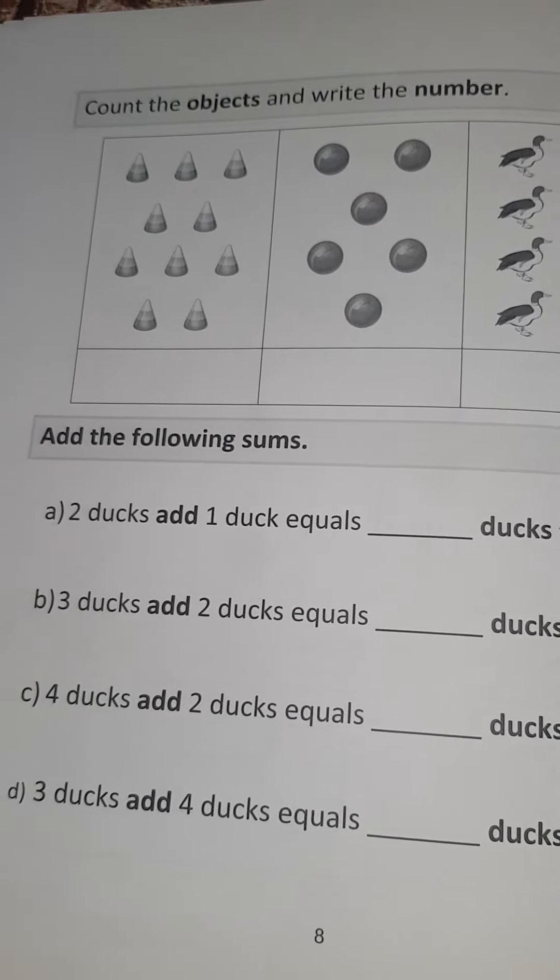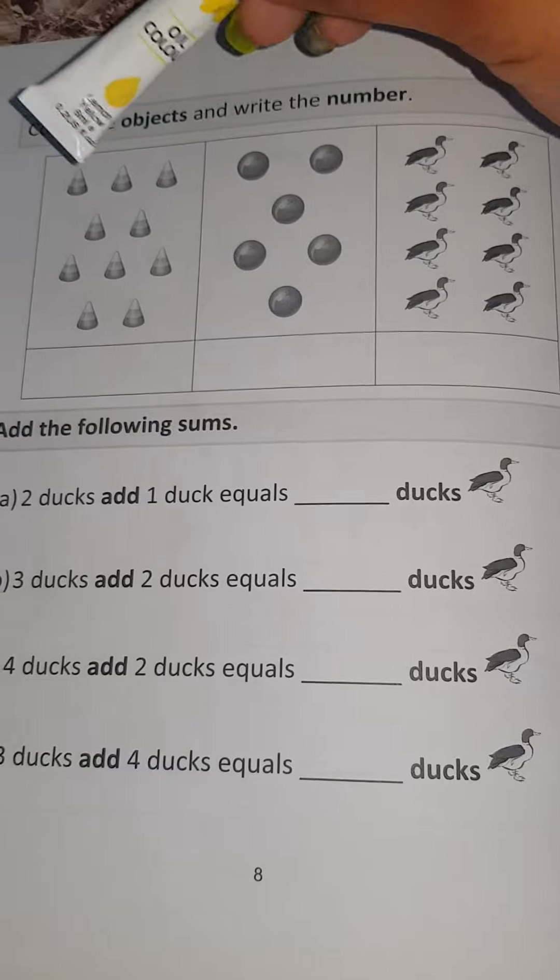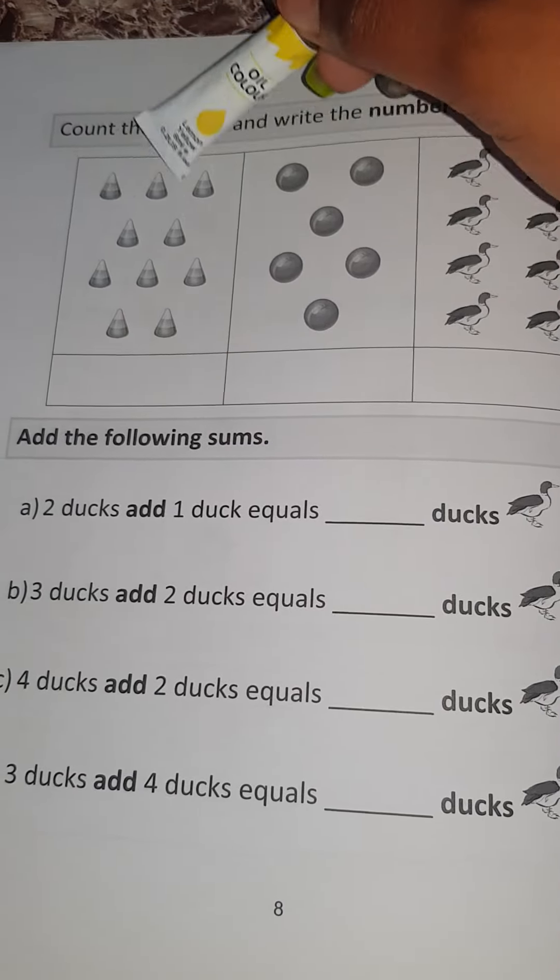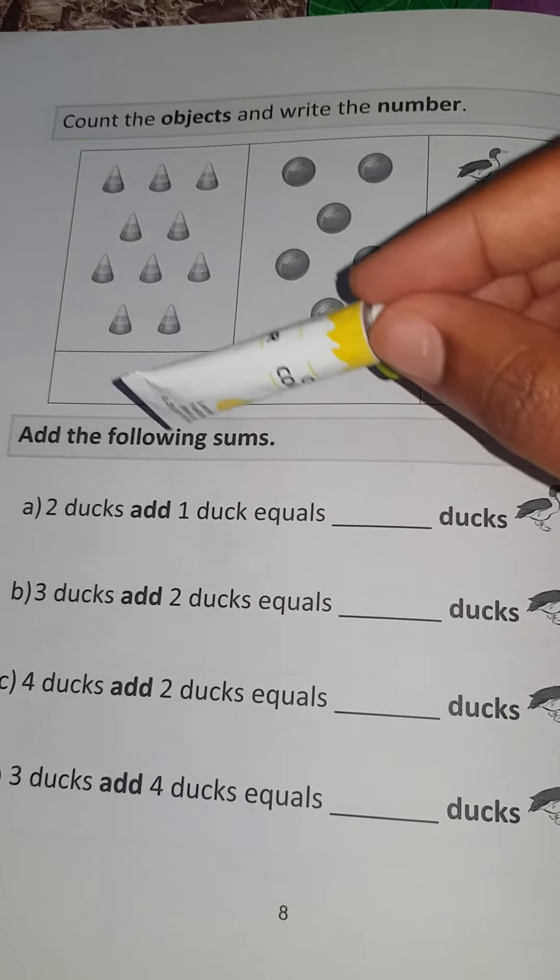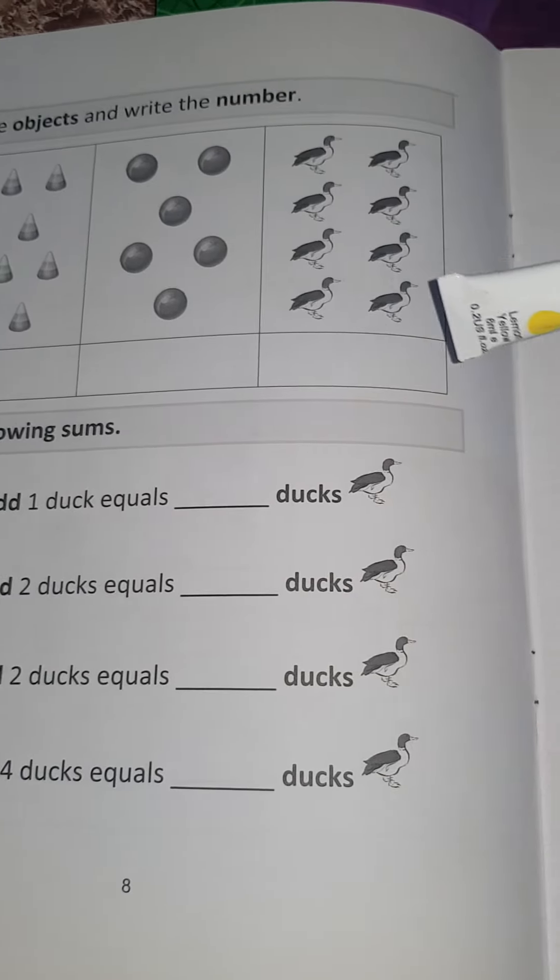Remember we're doing test four. So that means we're completing page eight as well. We're counting the objects. So count how many you have here and put the number here. And for this one, you were doing some addition. So two ducks add one duck equals...